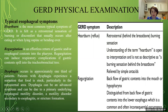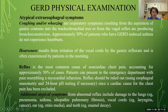GERD can be described as retrosternal burning sensation relieved by antacids. Regurgitation is the effortless return of gastric or esophageal content into the pharynx. Regurgitation can induce respiratory complications if gastric contents enter the tracheobronchial tree, ranging from aspiration pneumonias to pleuropneumonias and even bronchiectatic disorders in some cases. Dysphagia occurs in approximately one third of patients, who experience a sensation that food is stuck, particularly in the retrosternal area.